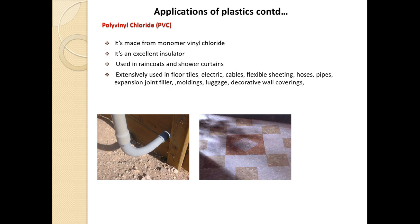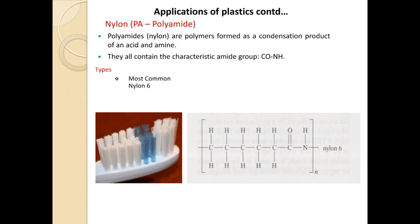The third polymer is PVC — polyvinyl chloride — made from the monomer vinyl chloride. It is an excellent insulator used in rain coats, shower curtains, pipes, floor tiles, electric cables, flexible sheeting, hoses, expansion joint filler, moldings, luggage, and decorative wall coverings. PVC is one of the most popular plastic materials for a wide range of applications.